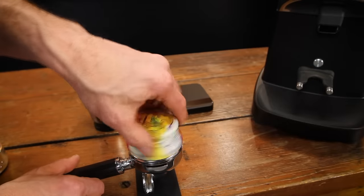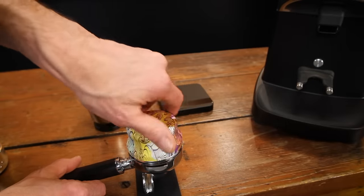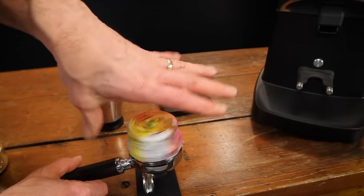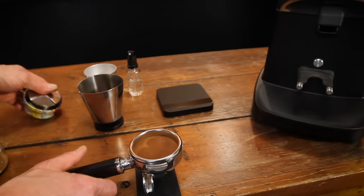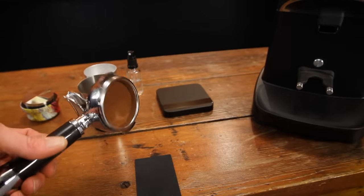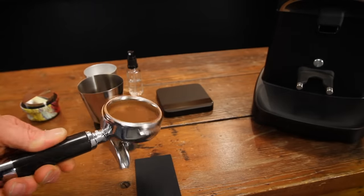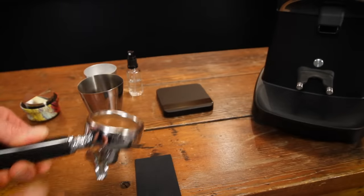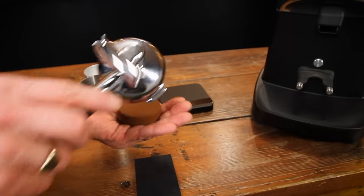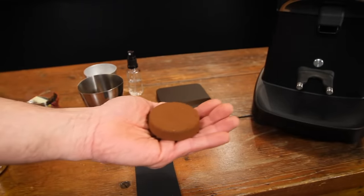From there tamp or in my case level and compress with a leveler and you're on your way to a fantastic coffee. I think I might have mentioned in some other videos that I'm a convert to levelers. They give you great even distribution and they handle compressing the coffee as well. Try out the jack leveler and I guarantee you you're never going to go back to tamping.